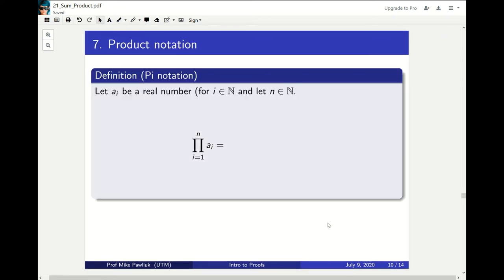Now we move on to product notation. Again, let ai be a real number, so a1, a2, a3, etc., and let n be the stopping index.